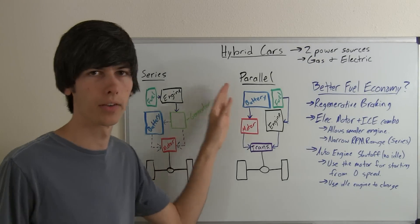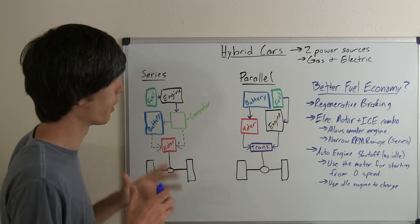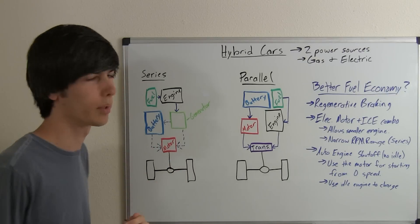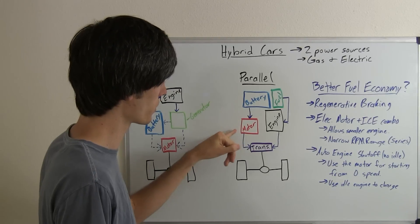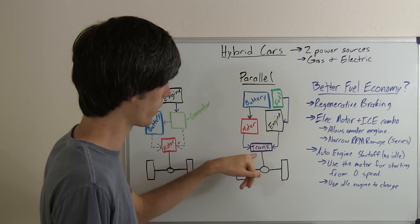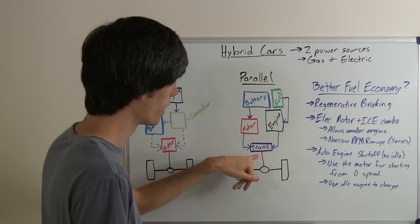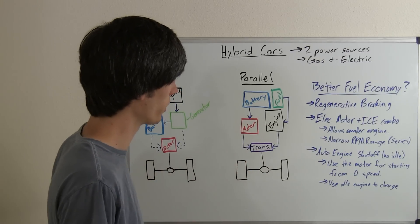The other type of hybrid car is parallel, and this means that both power sources can directly power the wheels. You've got a battery which charges the motor. The motor goes to the transmission, sends its power to the transmission, and then from the transmission, you can send your power to the wheels.